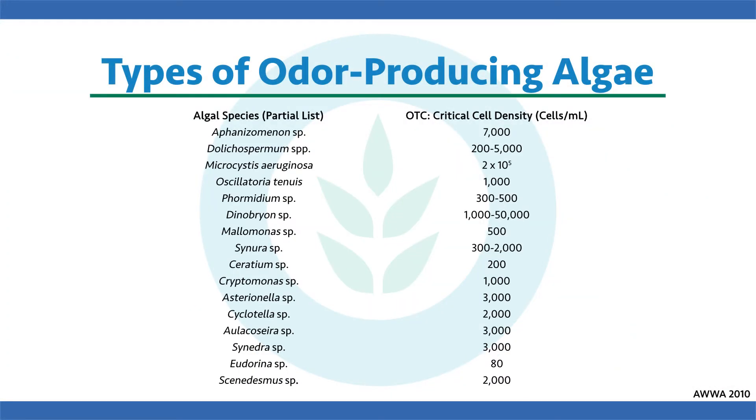Starting with drinking water — many different algae can cause issues. Here's a quick list of common types and their odor threshold concentrations, which tell us the density of algae at which humans can detect and smell it. Those are the critical cell densities we look at to determine when we have a problem. I want to go through some common types we've encountered in potable water systems and give you a description of how people have characterized those taste and odor compounds.